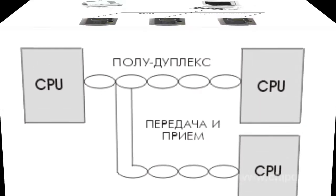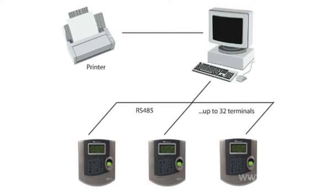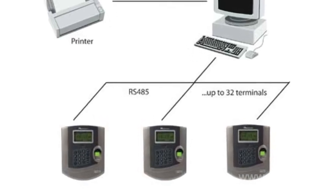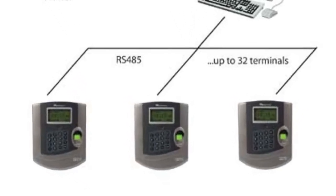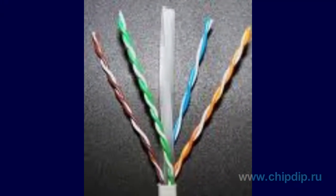A network built on RS-485 interface consists of transceivers connected by a twisted pair cable. The basis of RS-485 interface is the principle of differential or balanced data transmission. The idea is that the signal is transmitted by two wires.